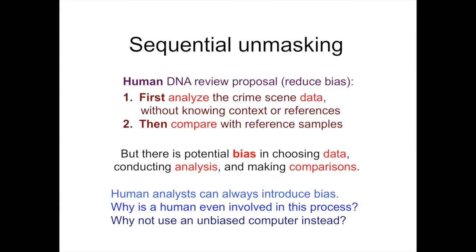Sequential unmasking has been proposed as a way of reducing bias in human DNA review of mixtures. The idea is to first have a human analyze the crime scene data without knowing the case context or DNA profile references, and only afterwards make comparisons to reference samples. But there is still potential human bias in how people choose the data, how they conduct the mixture analysis, and how they make comparisons. Human analysts can always introduce bias — so why is a human even involved in the process?